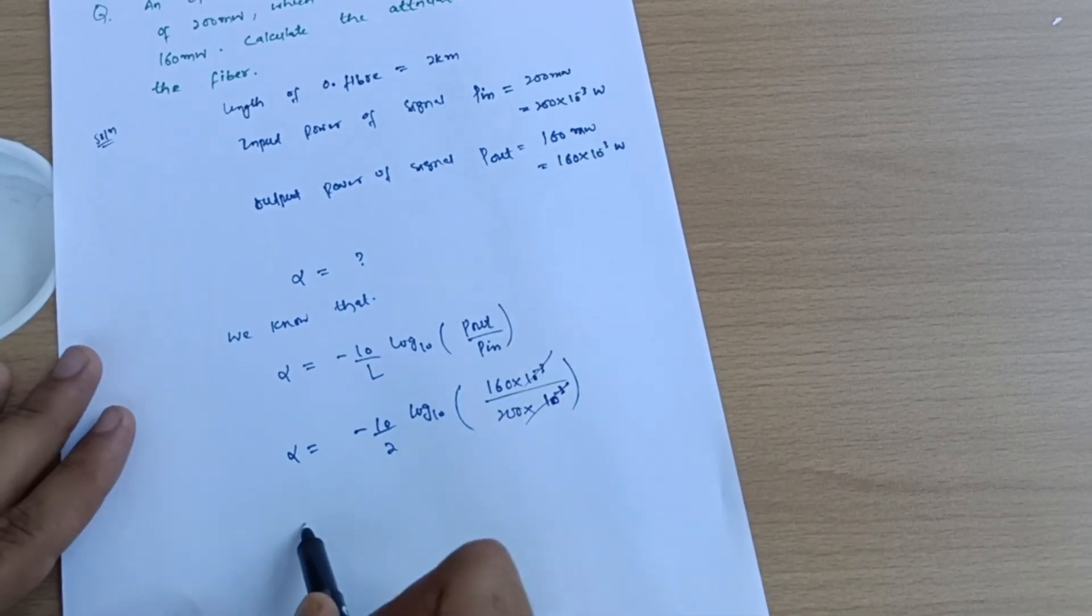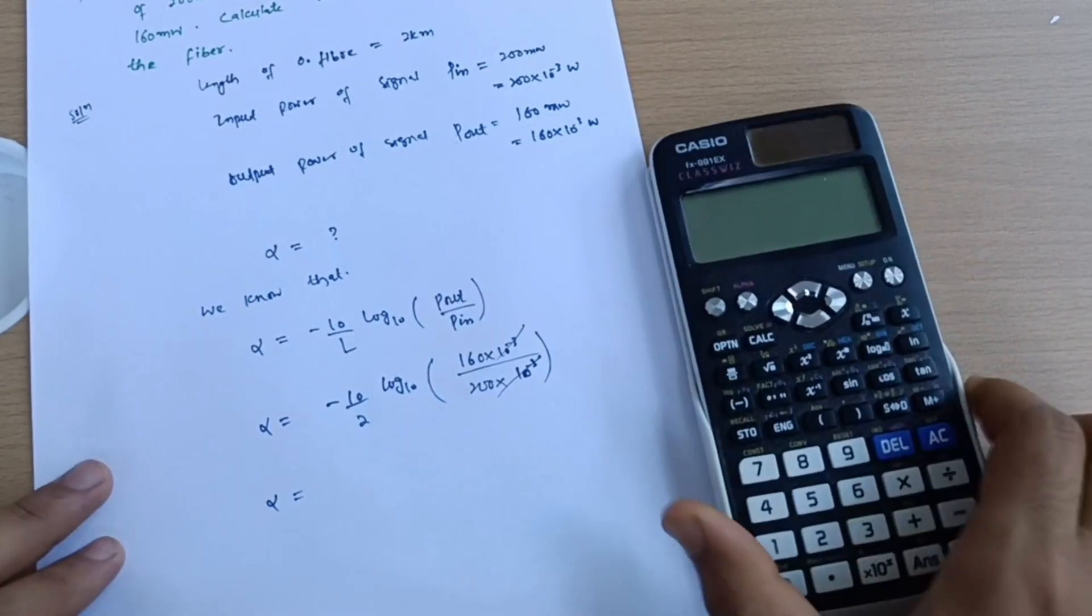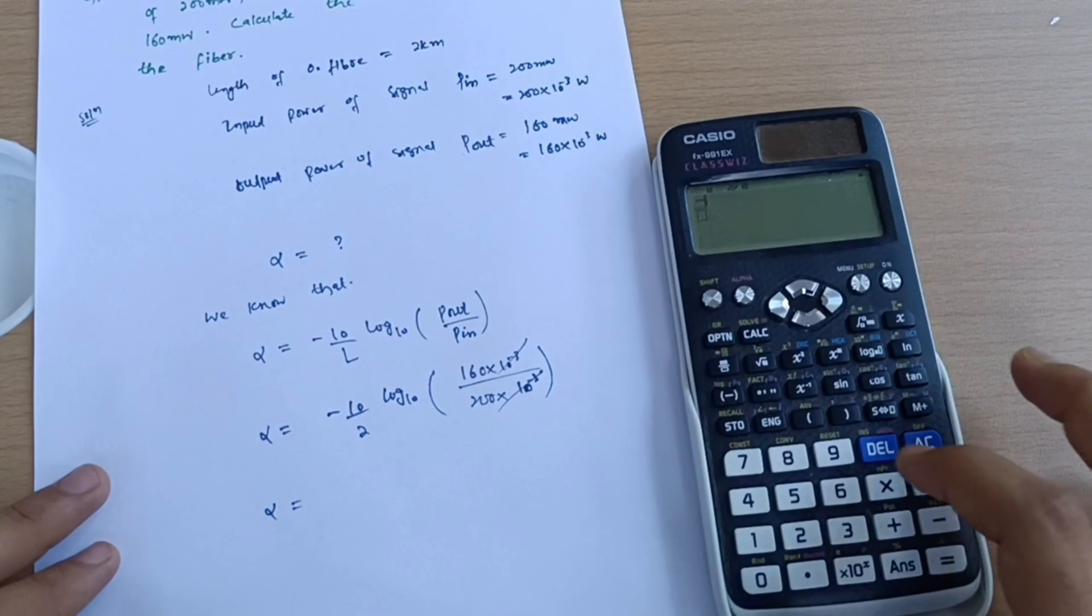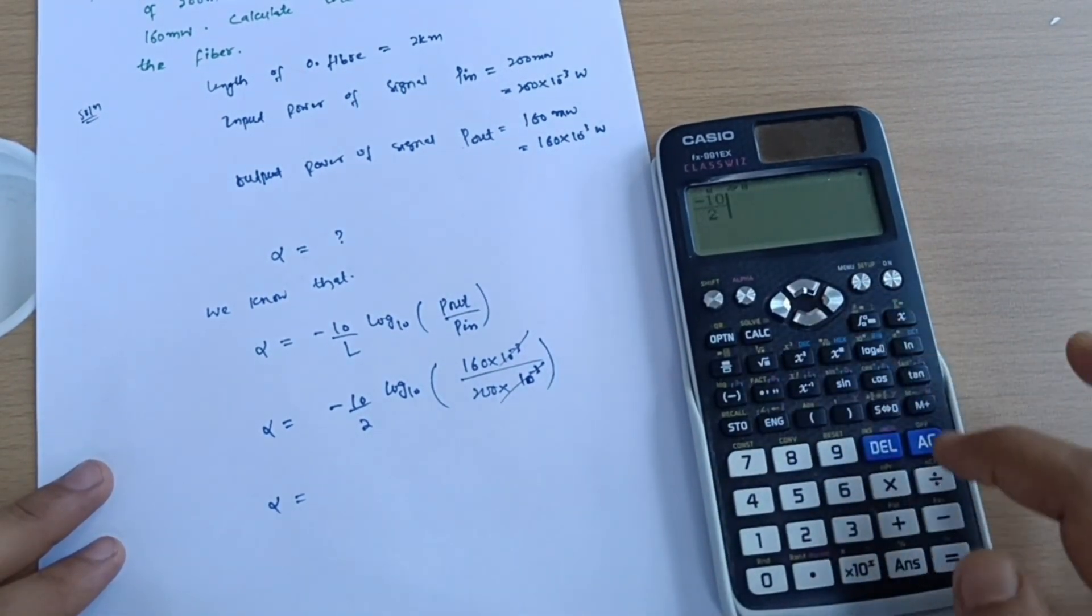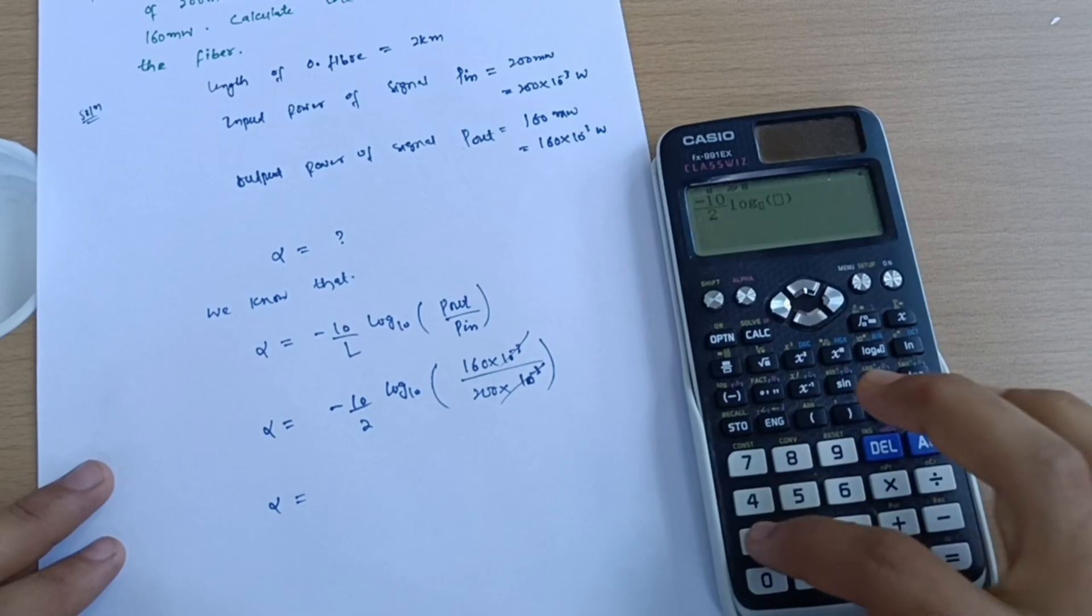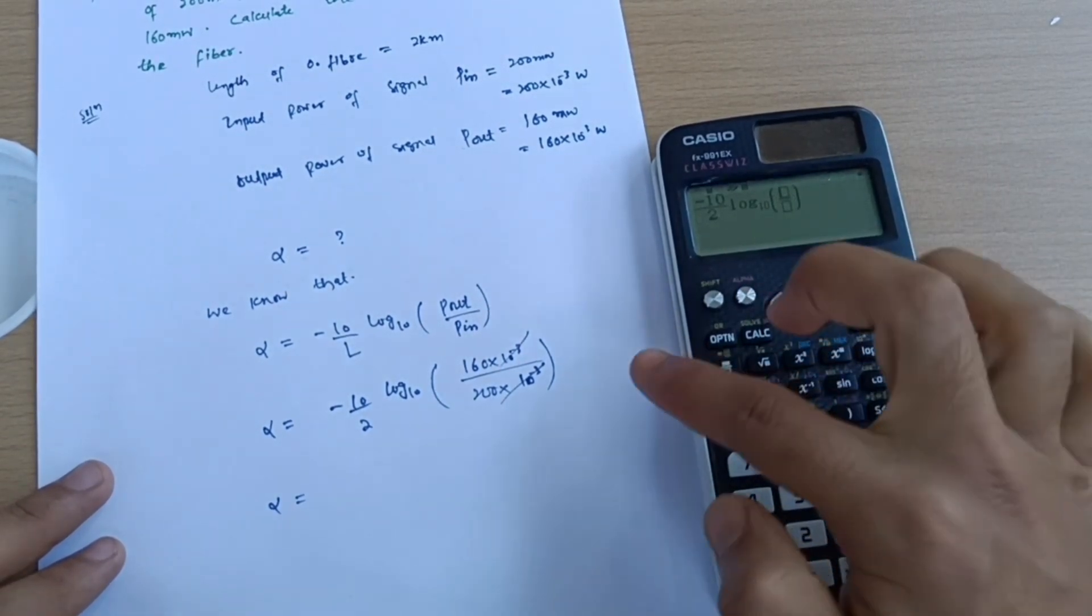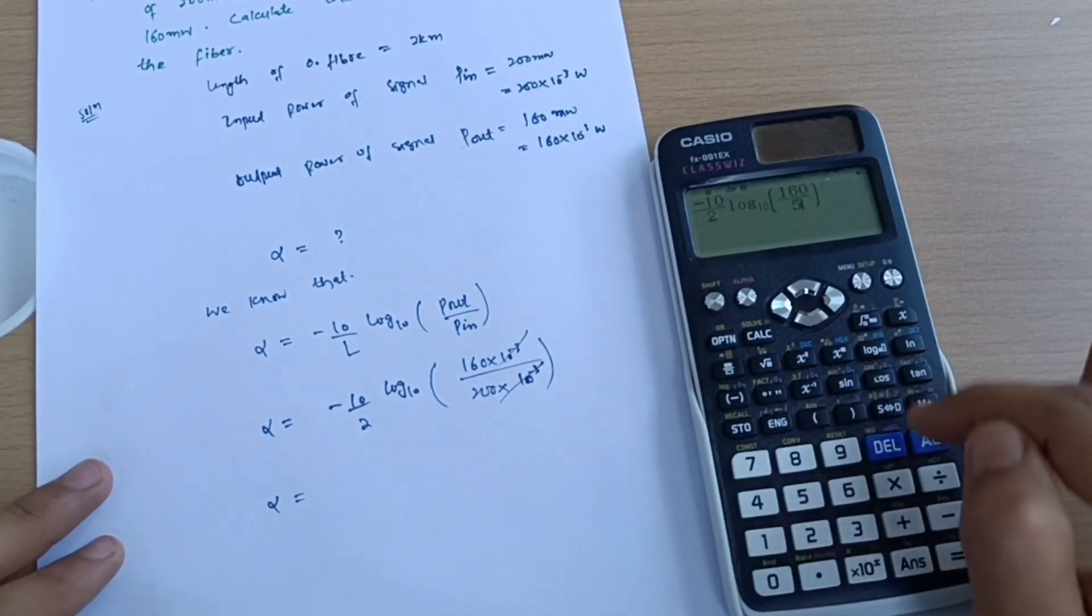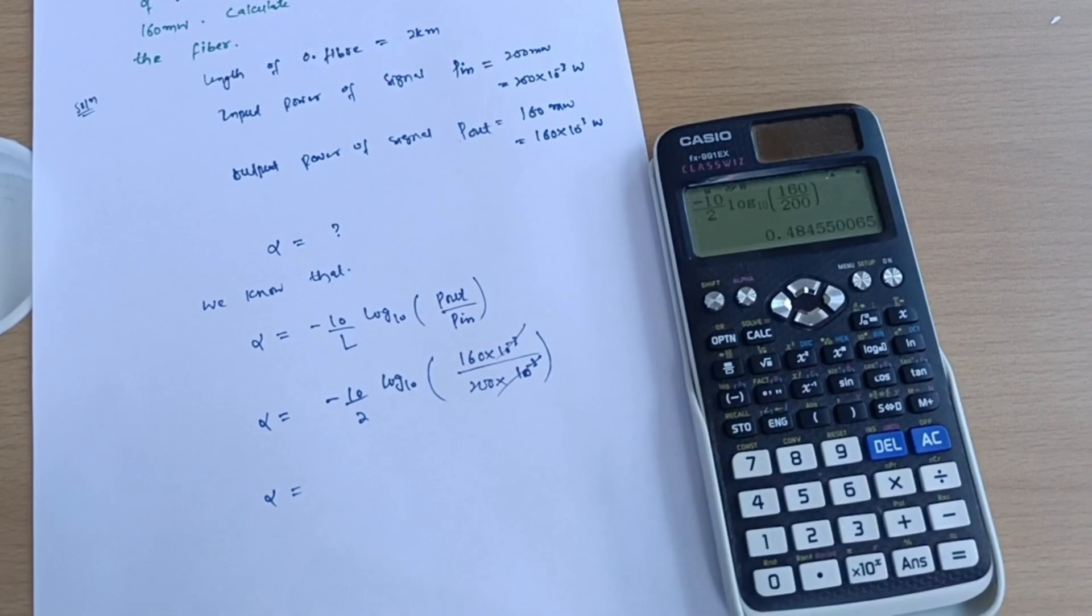So see here, this is your minus 10 by 2, log of 10, log to the base 10, then 160 upon 200 - 160 upon 200, which is equal to 0.48. So 0.48 is your answer.